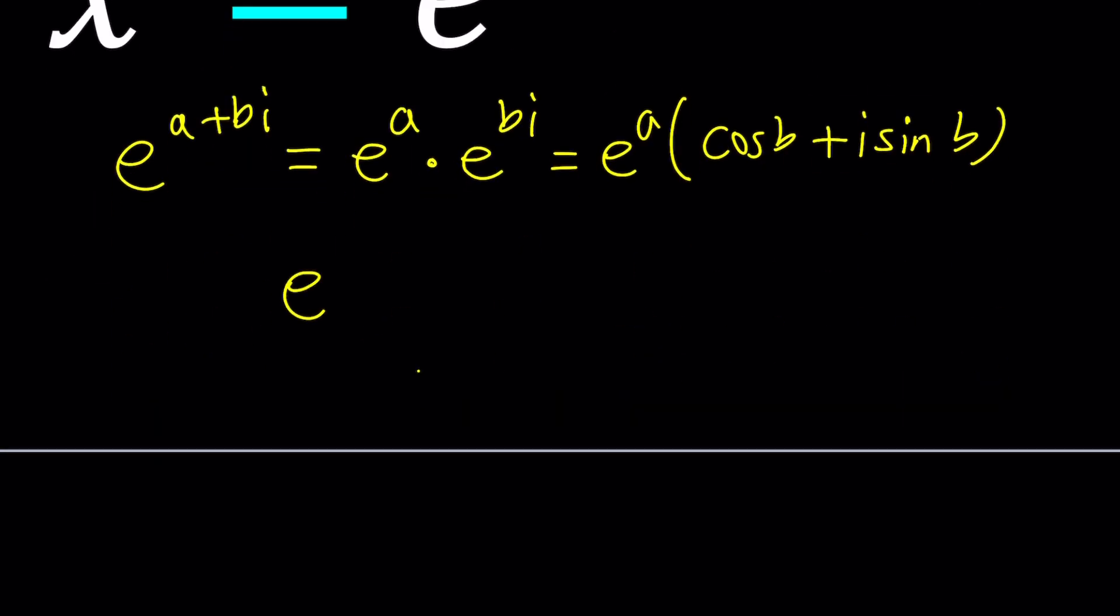Remember Euler's formula gives us something like this: e to the power i alpha is equal to cosine alpha plus i sine alpha. So in this case, b happens to be the angle, or the argument.